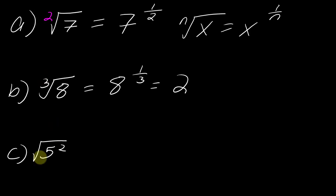Now next I have this one. Notice I have this exponent here and this root here. So the way that that would get written then, this would be 5 to the 2 over 2.